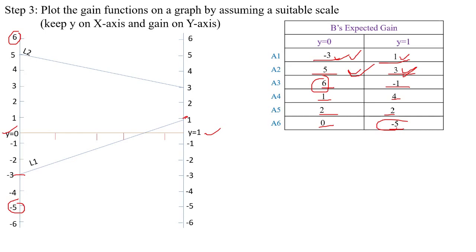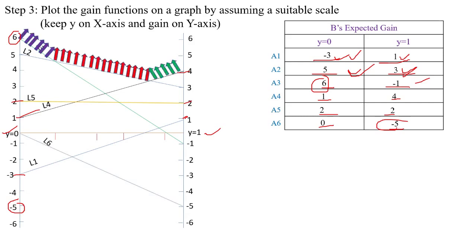For A4, join the points 1 and 4 to draw line L4. For A5, join the points 2 and 2 to draw line L5. For A6, join the points 0 and −5 to draw line L6.